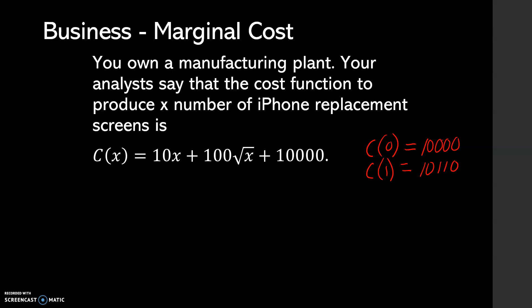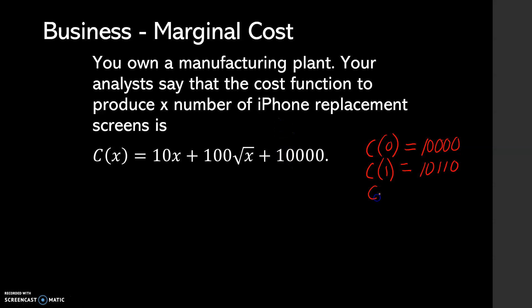If you look at this equation, the cost is going to go down the more screens you have, because the 10,000 at the end is fixed and is not going to change. The cost to create 100 screens in your factory is $12,000. If you divide that out, $12,000 total divided by 100 screens means it costs you $120 for one replacement screen. I don't think anyone's going to buy that, but at least you understand what this thing means.